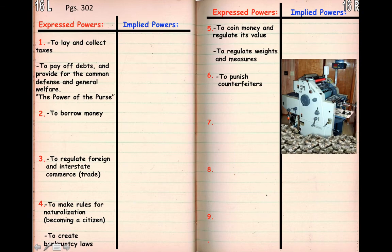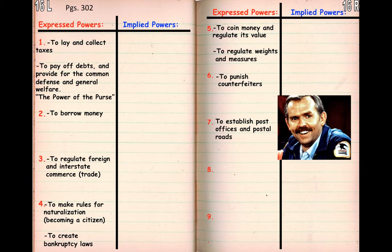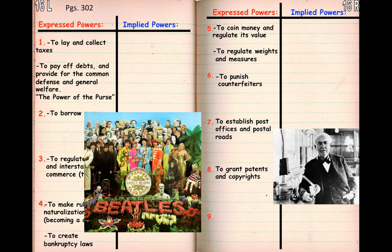We also have the right to punish counterfeiters — if you see a counterfeit money machine in someone's basement, they're going to jail. They also have the power to establish post offices and postal roads, and the power to grant patents and copyrights. Patents are for tangible things such as the light bulb, and copyrights are for your intellectual property — things like books, songs, music, et cetera.